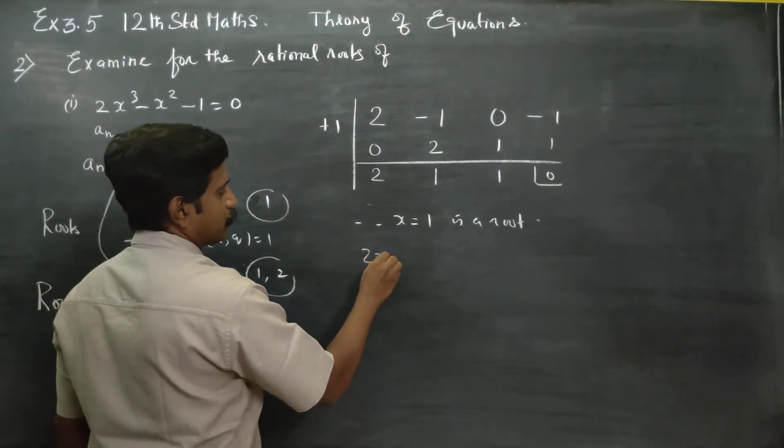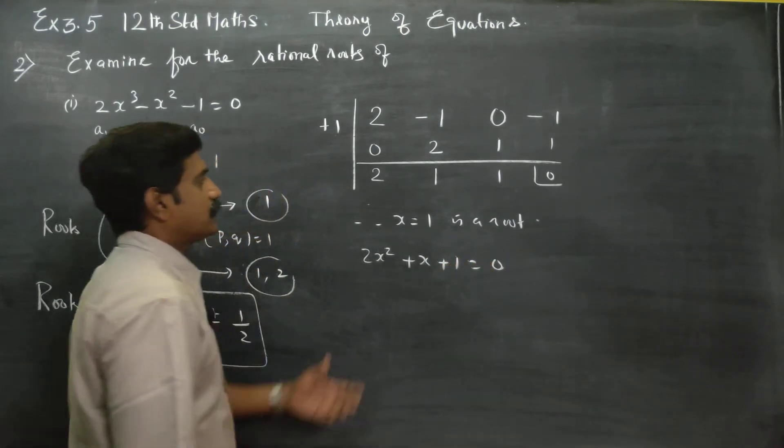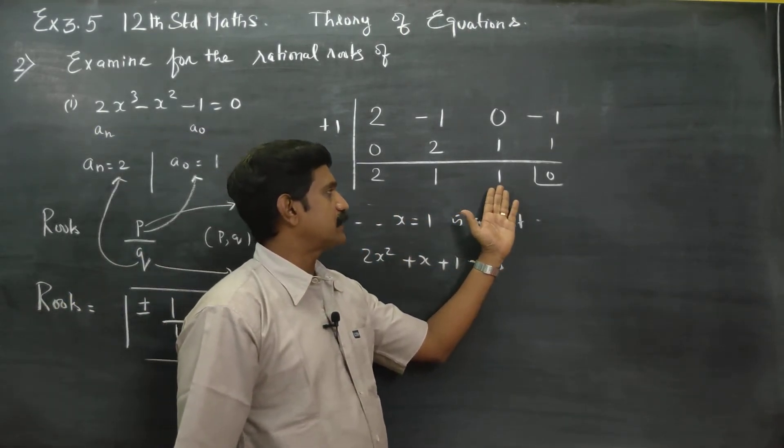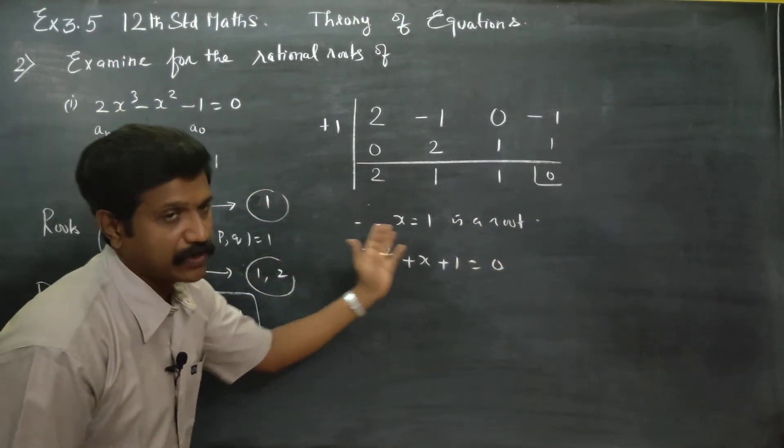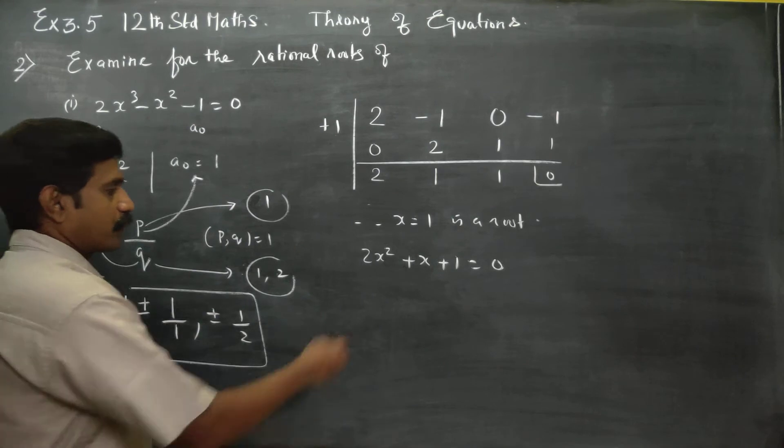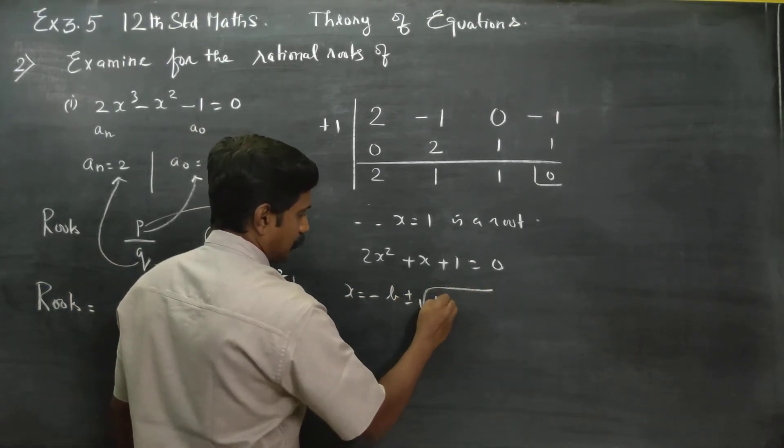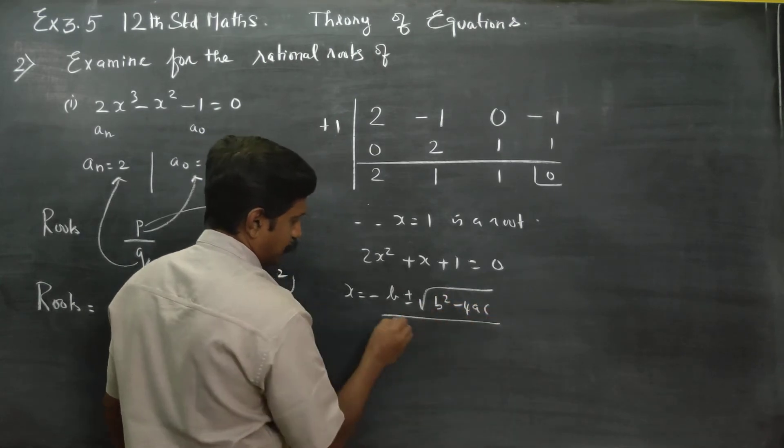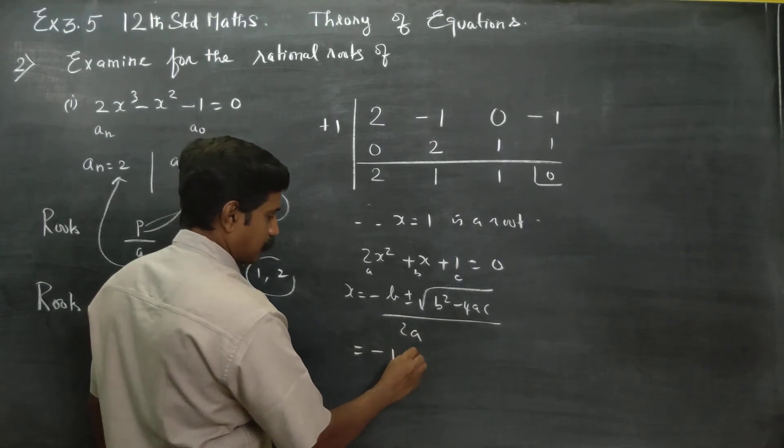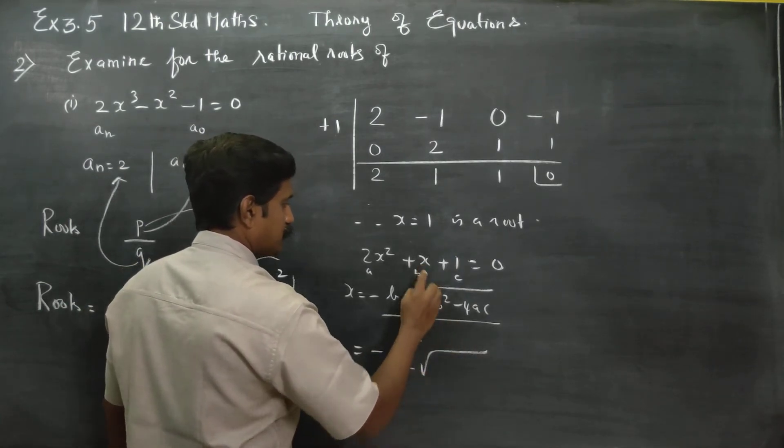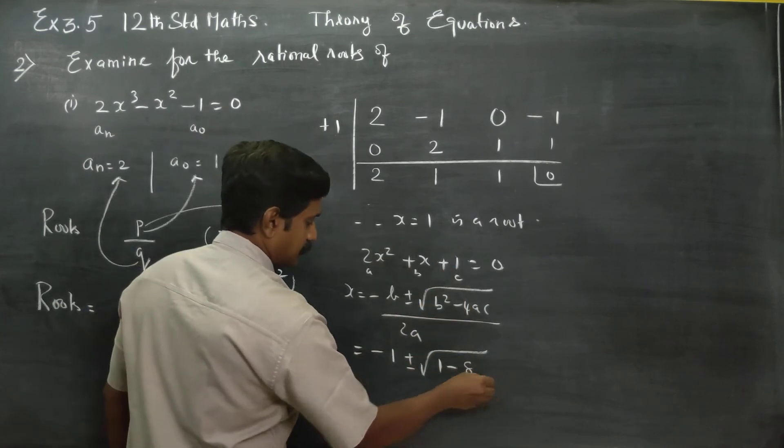To find the other root, we solve 2x^2 - x - 1 = 0 using the quadratic formula. x = (-b ± √(b^2 - 4ac)) / 2a. This is my a, this is my b, this is my c. x = (1 ± √(1 - 4(2)(-1))) / (2(2)) = (1 ± √(1 + 8)) / 4.